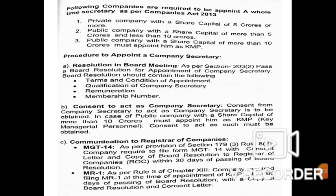The procedure for appointment: first, pass a board resolution specifying terms and conditions. Verify the qualification, fix the remuneration, and allot a membership number. Then obtain the consent of the proposed Company Secretary — confirming they are willing to work under the prescribed rules, terms, conditions, and remuneration.